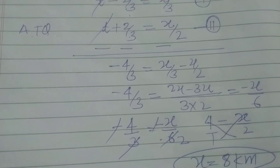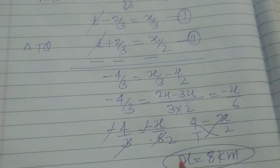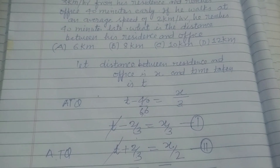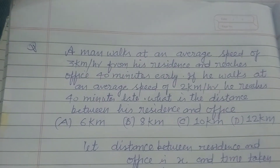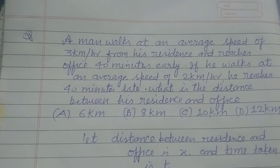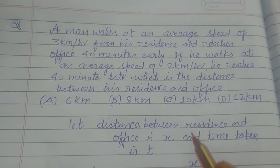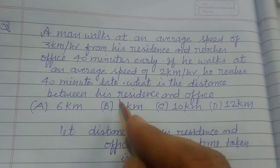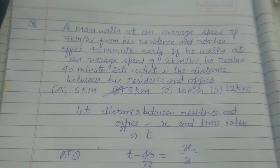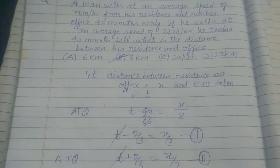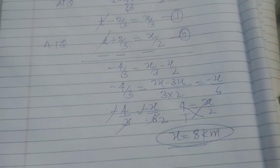So this is the distance covered by the man from his residence to his office. The answer to this question is found in option B. In this way we solve this problem. I hope you got it. Thanks for watching.